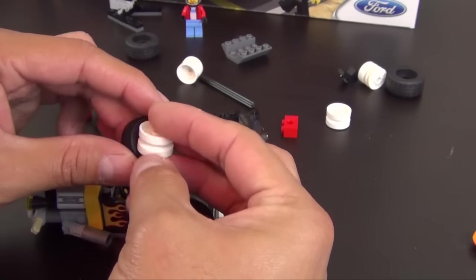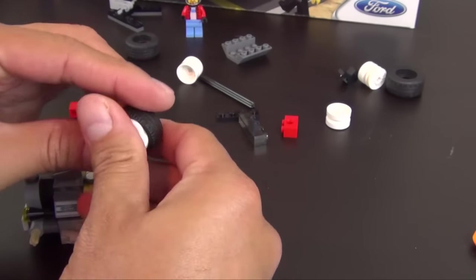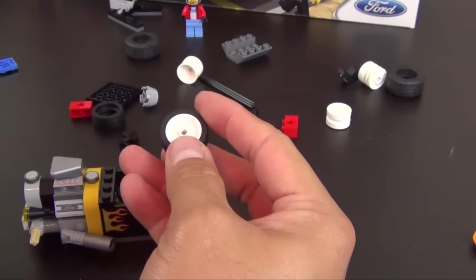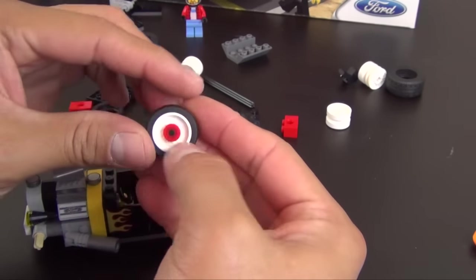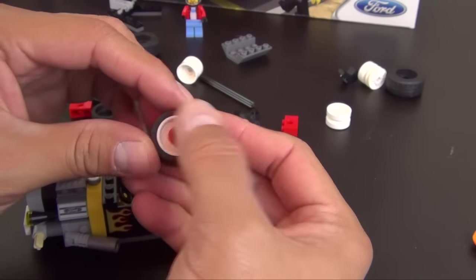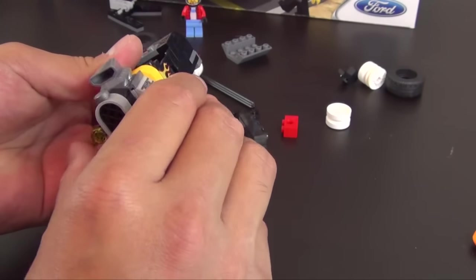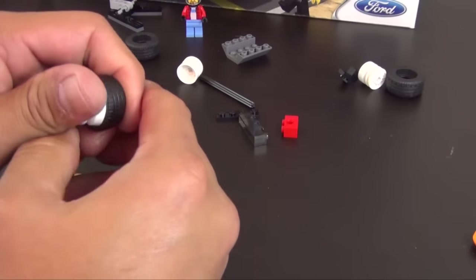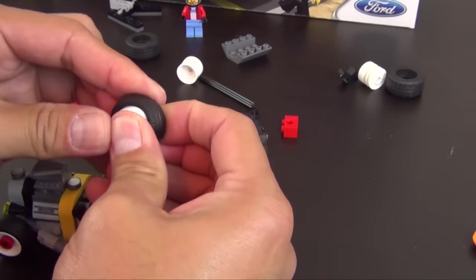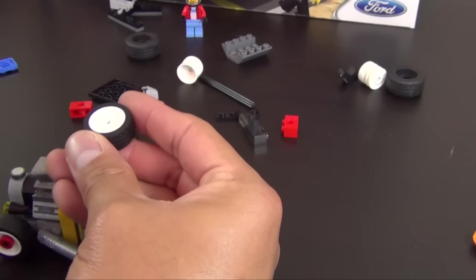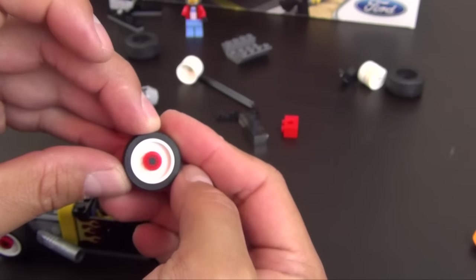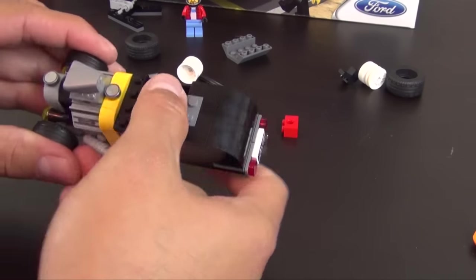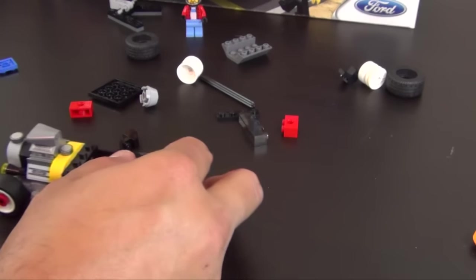All right, so next we have the front wheels. There are the white wheels with black tires and we have this cool little printed hubcap piece right in the middle. Attaches there, we're going to repeat it for the other side. That's our two front tires.